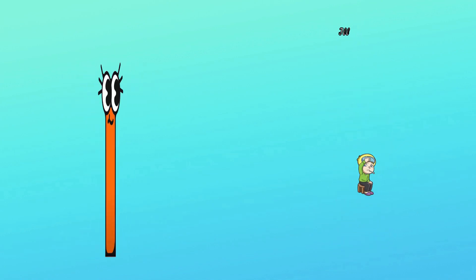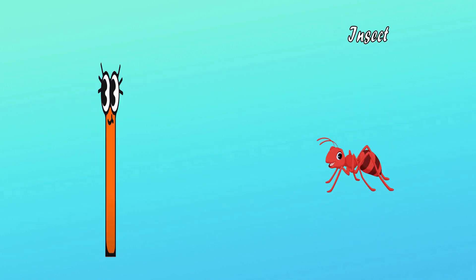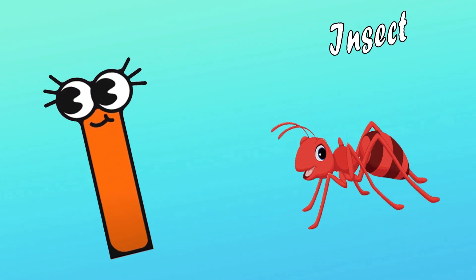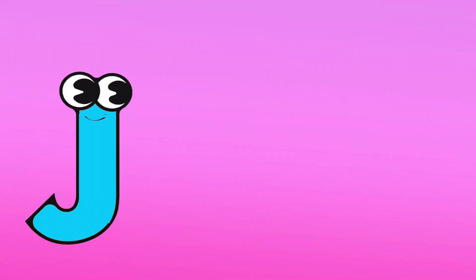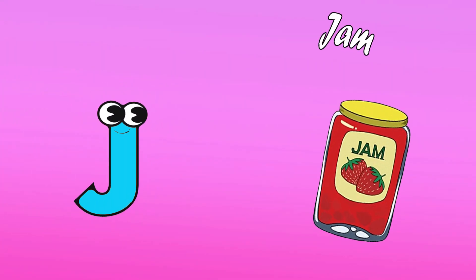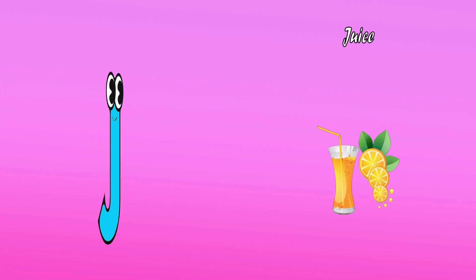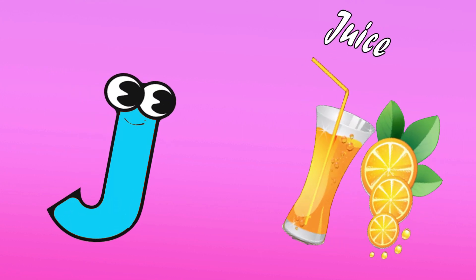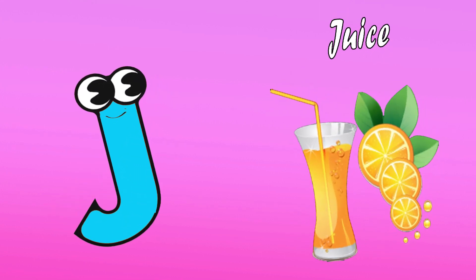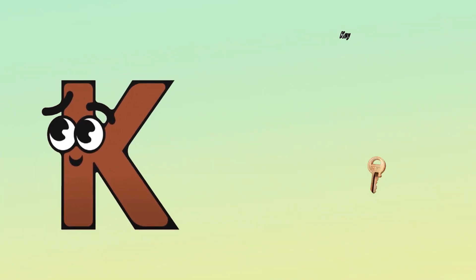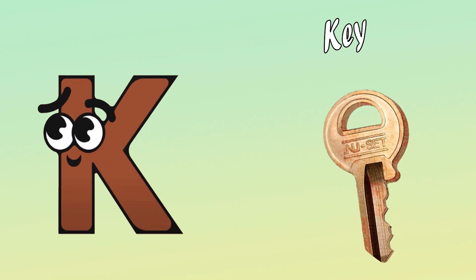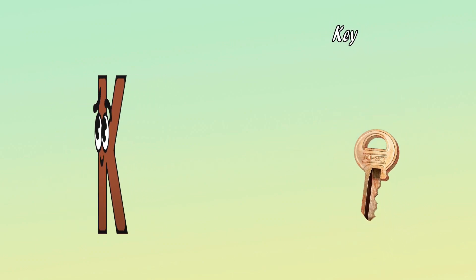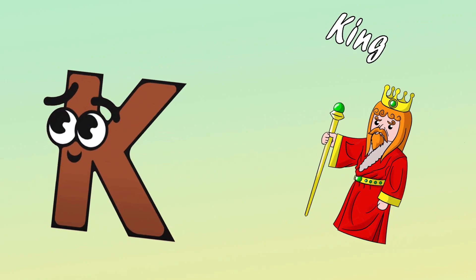I is for Insect. I, I, Insect. J is for Jam. J, J, Jam. J is for Juice. J, J, Juice. K is for Key. K, K, Key. K is for King.